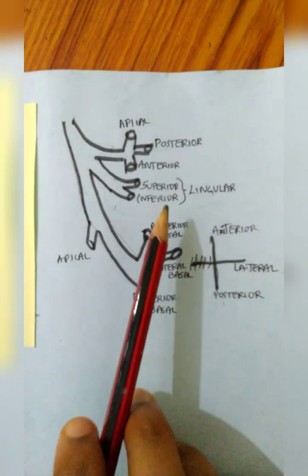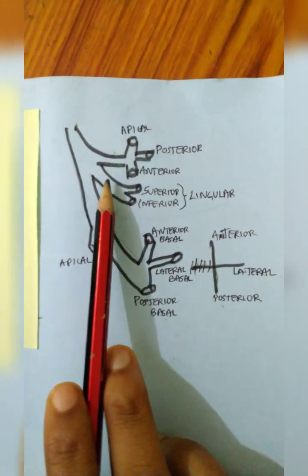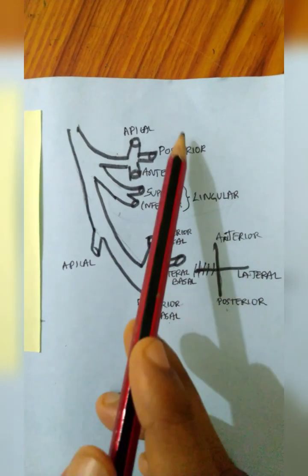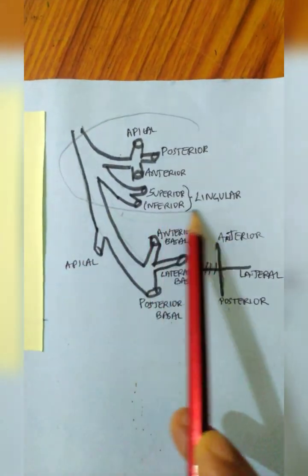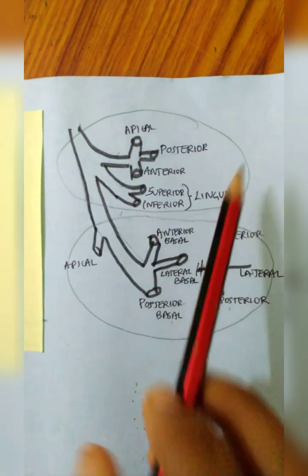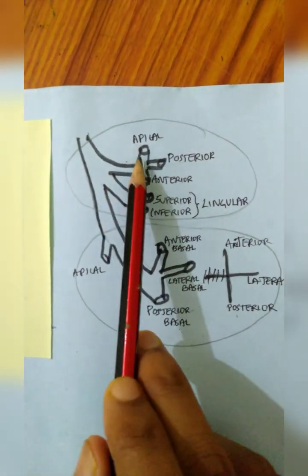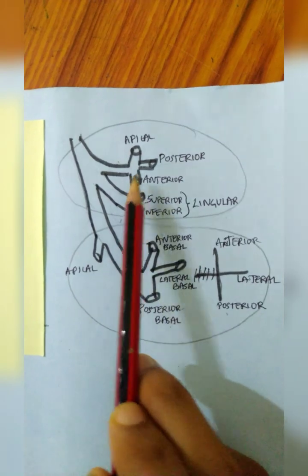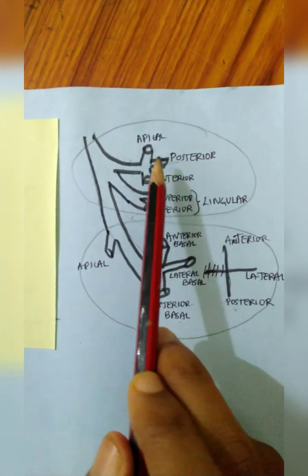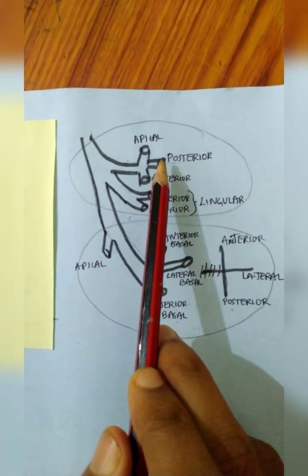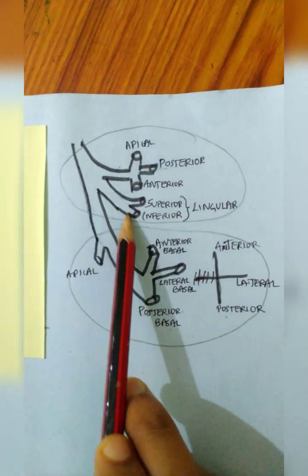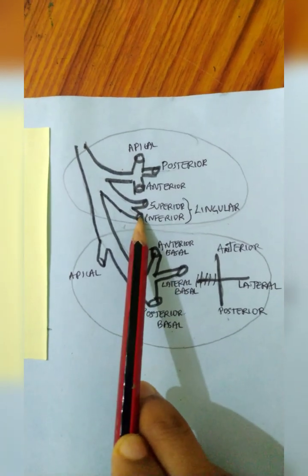This is the bronchial segments of the left lung. This is the left bronchus — this much is the upper lobe, and this much is the lower lobe. Upper lobe: apical portion, then anterior portion and posterior portion, corresponding to the same parts of the left lung upper lobe. Also here we have lingular — superior lingular and inferior lingular.